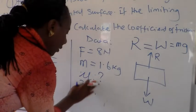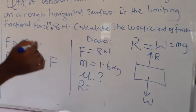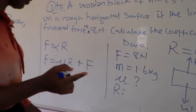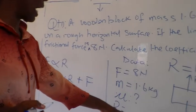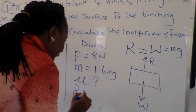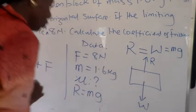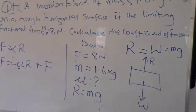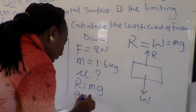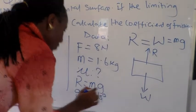So, if we have our R, which must be equal in magnitude to our weight but opposite in direction. Therefore, we can attribute our R as our mg. So, giving us R as mass and acceleration due to gravity. We all know that acceleration due to gravity is a constant.